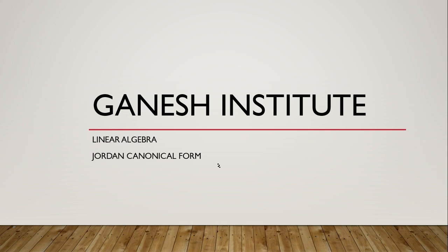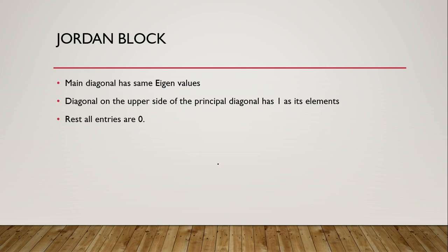Before going ahead we should know what is a Jordan block. A Jordan block has eigenvalues in its main diagonal, then all other elements on the upper side of the principal diagonal have one as its elements, and then rest all other entries are zero.